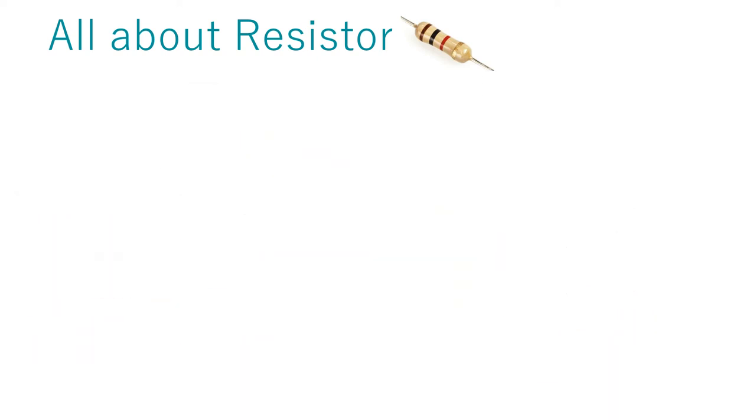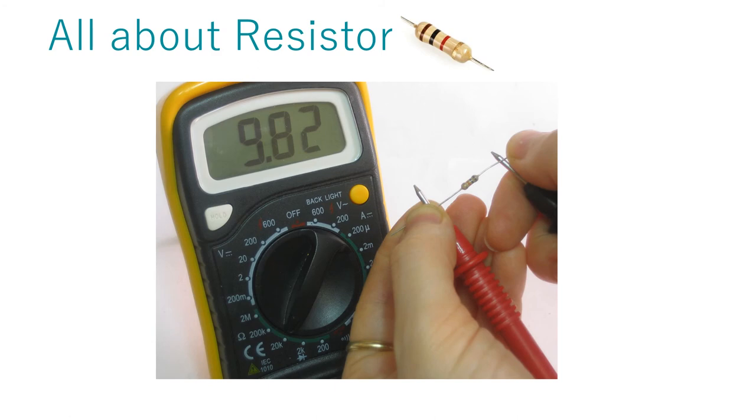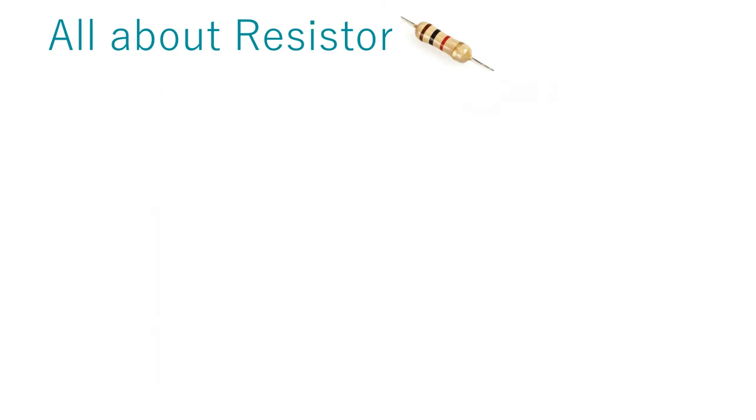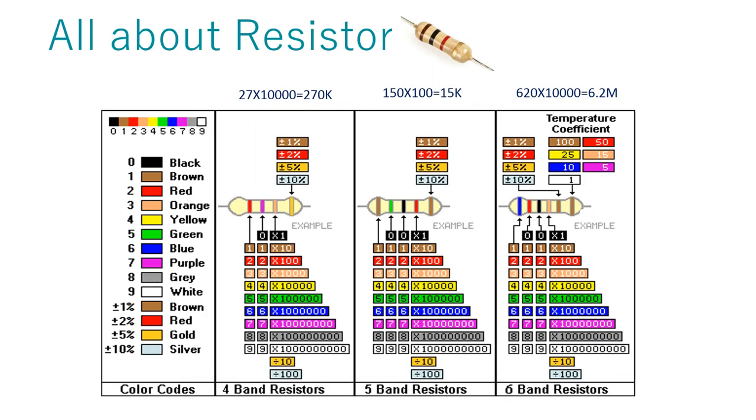The multimeter can be used to measure the value of the resistor. Value of the resistor can also be derived from its color code. Resistor has a specific number for each color. Like number 0 is of black color, number 1 is of brown color.